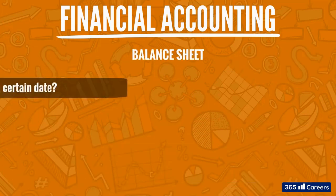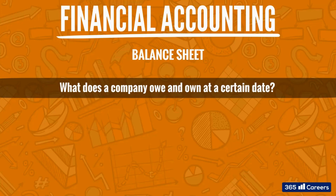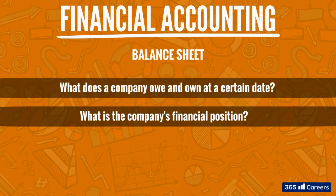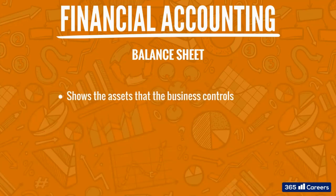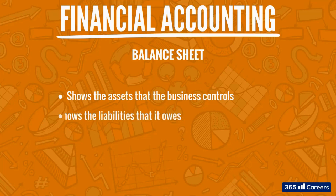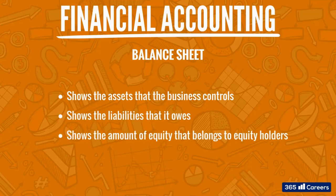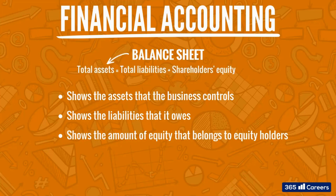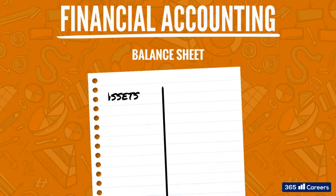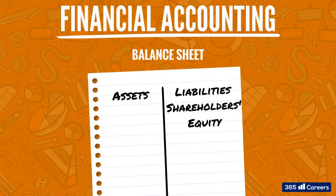The balance sheet answers the questions: what does a company owe and own on a certain date, and what is the company's financial position? It shows the assets that the business controls, the liabilities that it owes, and the amount of equity that belongs to equity holders. The reason why it is called a balance sheet is because total assets must equal liabilities plus shareholders' equity. It is important to remember that assets stand on the left side of the balance sheet, while liabilities and shareholders' equity are on the right side.